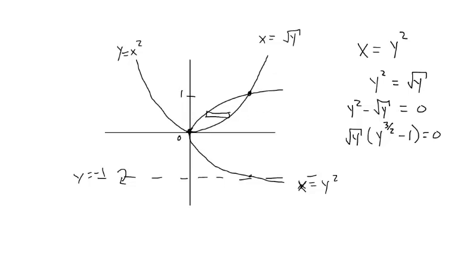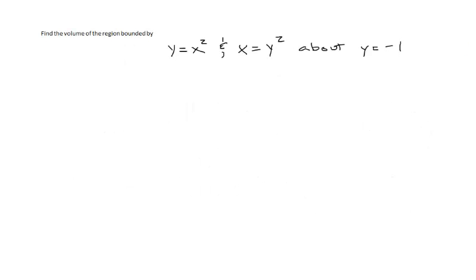Those become our limits of integration. The radius goes from the axis of rotation at y equals negative 1 to our slice. The generic distance from the x-axis to our slice is y, so the radius is y minus negative 1, or y plus 1. The area is right minus left: square root of y minus y squared. Our integral is 2π times the integral from 0 to 1 of (y plus 1) times (square root of y minus y squared) dy.